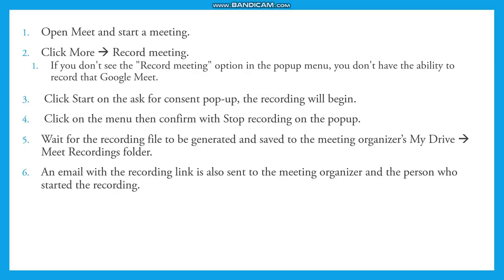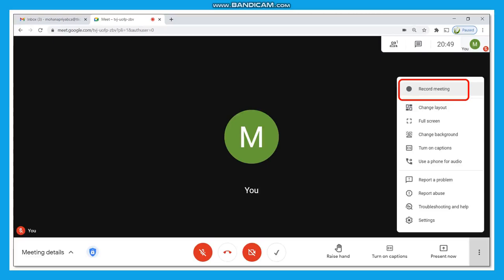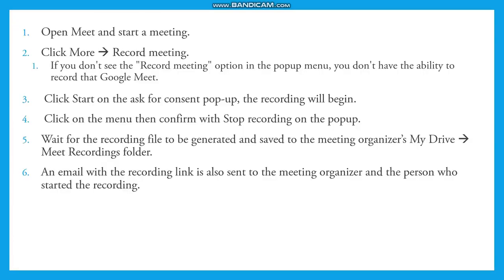So how do you do this? First, open Meet and start a meeting. You can click on More and select Record Meeting. If you don't see the Record Meeting option in the pop-up panel, you don't have the ability to record. Then click Start on the consent pop-up — the recording will begin. You can click on the menu and confirm with Stop Recording on the pop-up. Wait for the recording file to be generated and saved to the meeting organizer's My Drive, in the Meet Recordings folder.